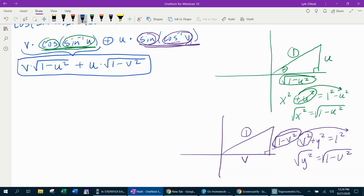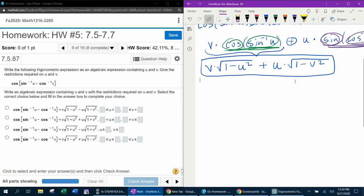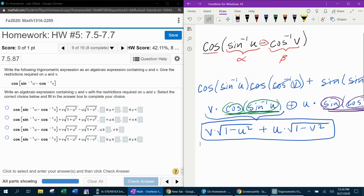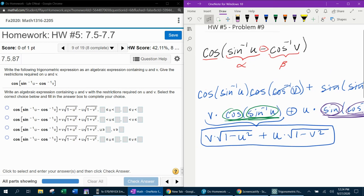And now that would be our algebraic expression. Now compare what we just got here to this last answer choice down here. v square root of one minus u squared plus u square root of one minus v squared. That's how they get that. This is the work involved to come up with this expression.